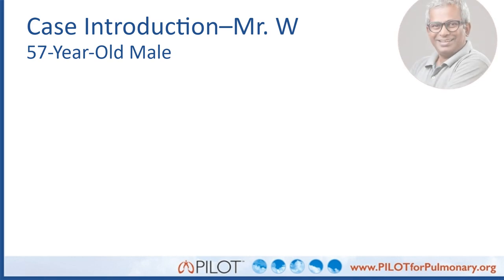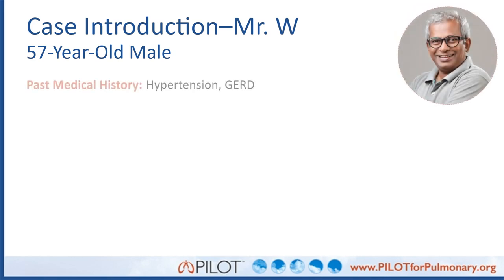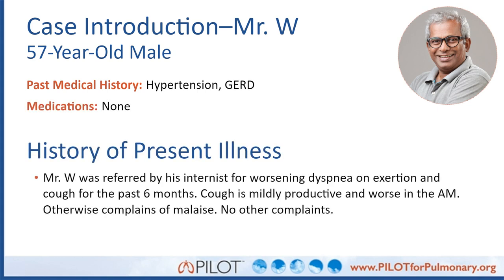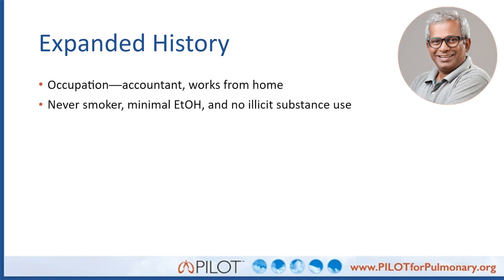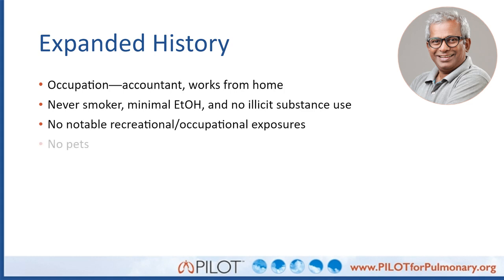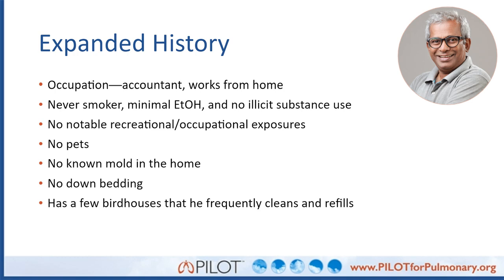Let's get into our first case. Mr. W is a 57-year-old male with a history of hypertension and GERD, not currently on any medications. He was referred by his internist for worsening dyspnea on exertion and cough for the last six months — a mildly productive cough, mostly worse in the morning — along with malaise. He's an accountant who works from home, has never smoked, has minimal alcohol use, and no illicit substance use. There are no significant recreational or occupational exposures, no pets, no mold, no down bedding. Notably, he does have a few birdhouses in his backyard that he frequently cleans and refills.